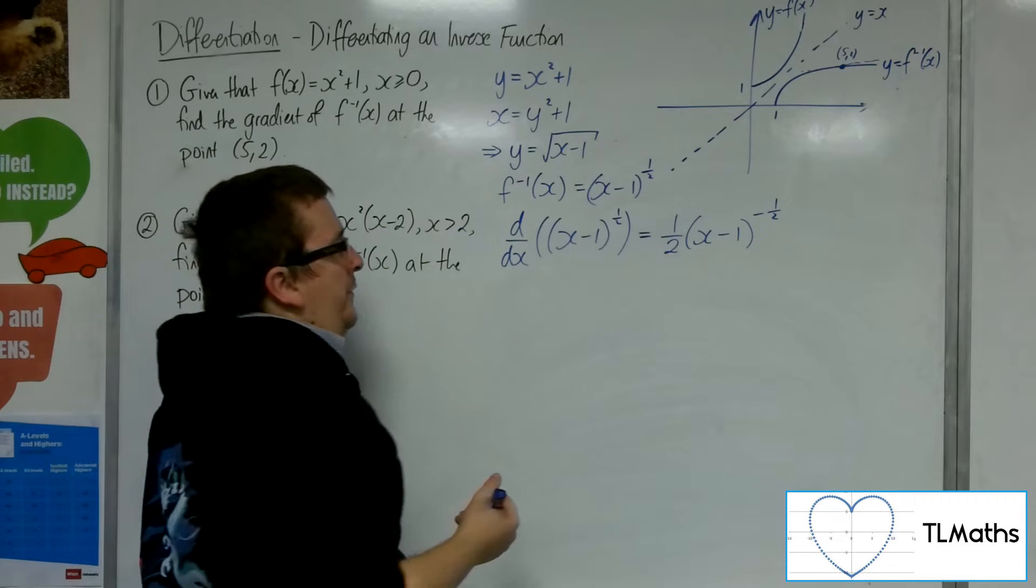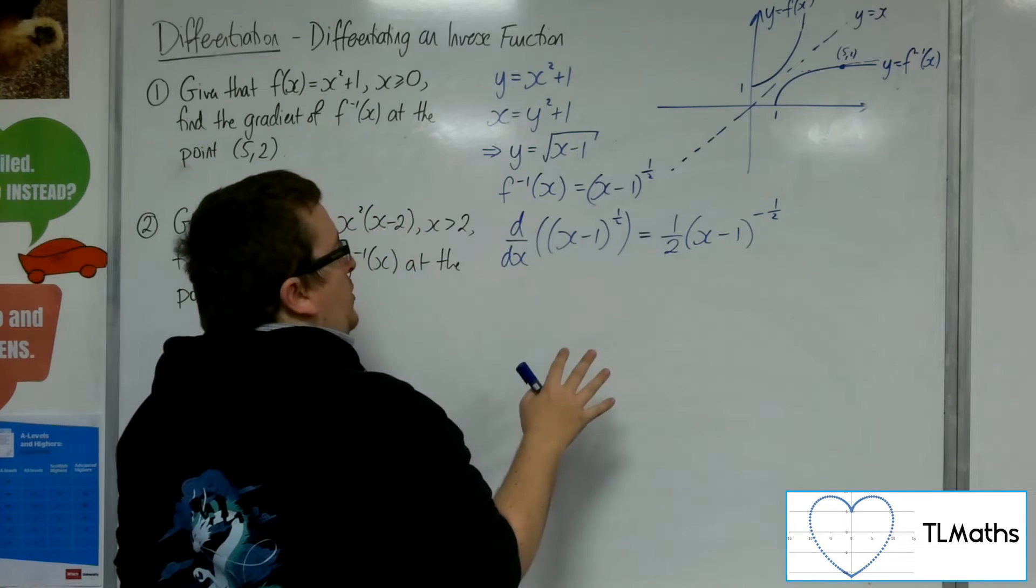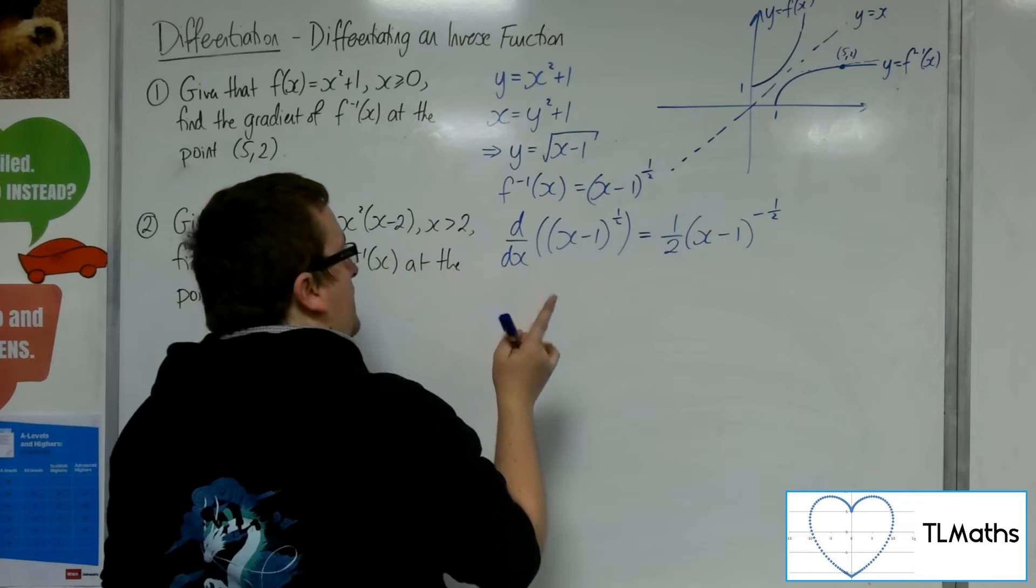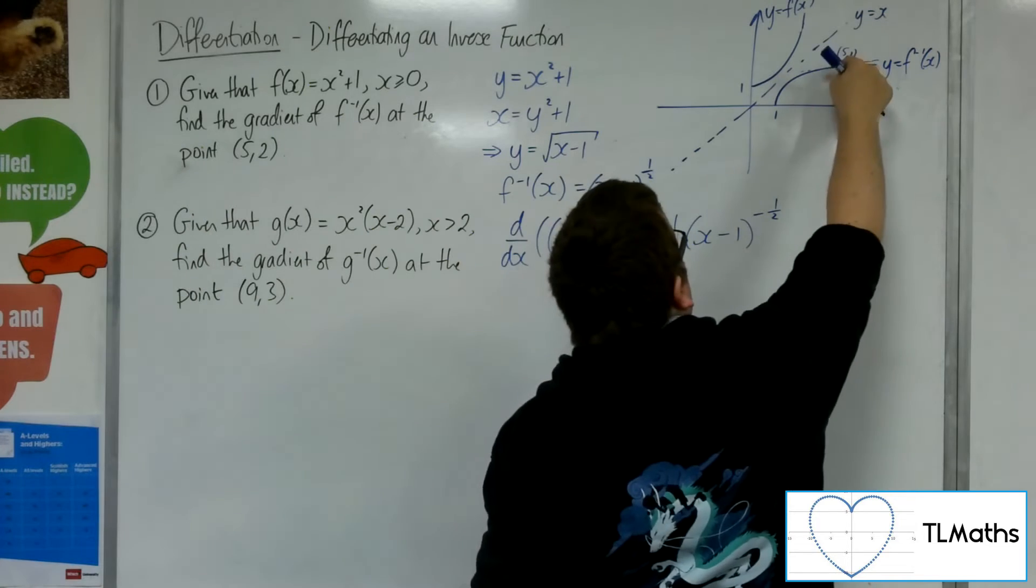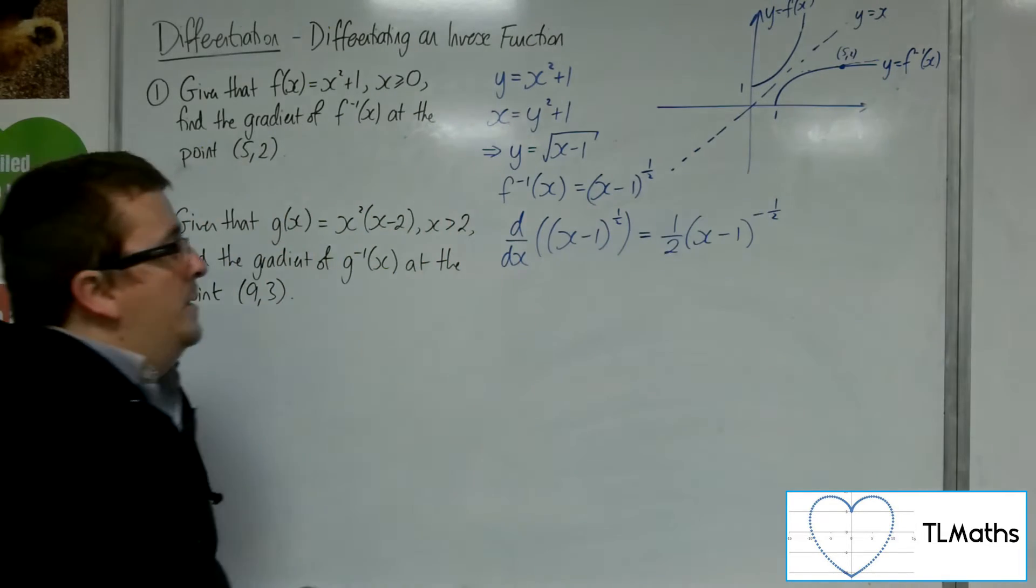Derivative of what's inside is just 1. That doesn't really make any difference. So then I want to substitute in the 5. And that will get me the gradient of the tangent to the curve at that point.